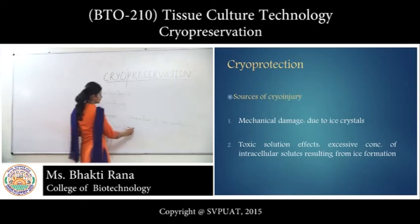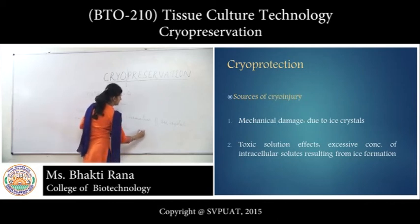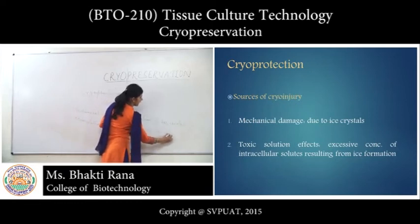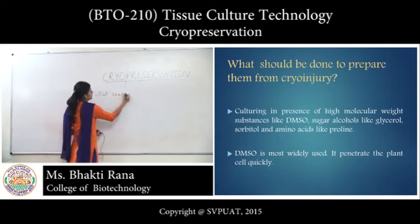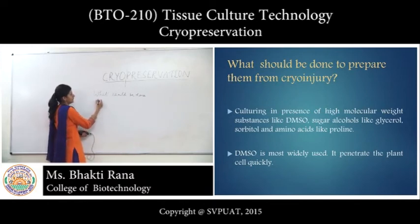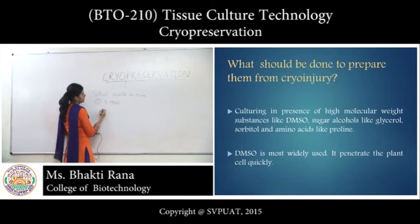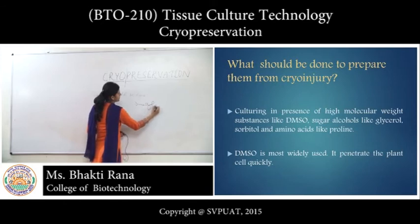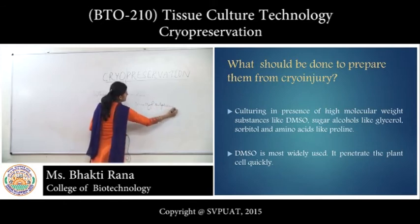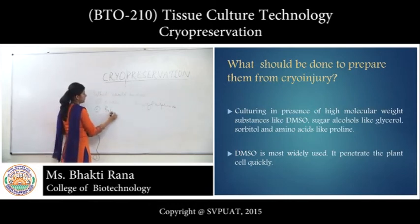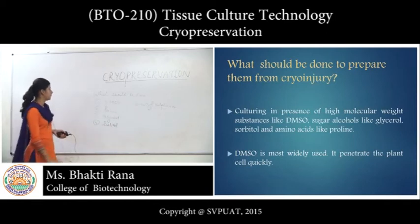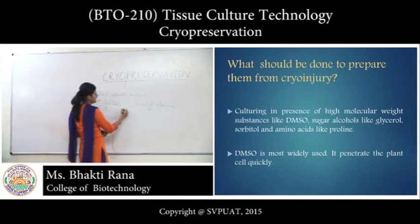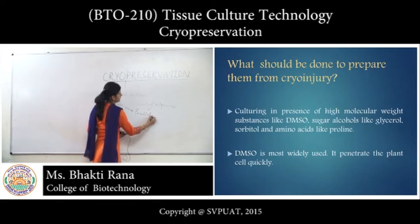Accumulation of solutes is due to the formation of solutes like sugars and amino acids. To protect cells from cryo injury, you can use DMSO — that is, dimethyl sulfoxide — or you can use proline, glycerol, or sorbitol. DMSO is the most widely used because it penetrates the cell wall quickly.